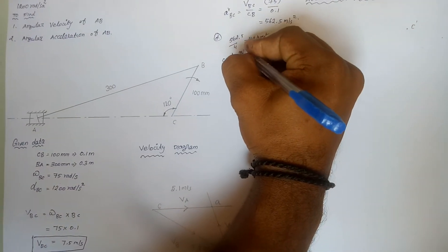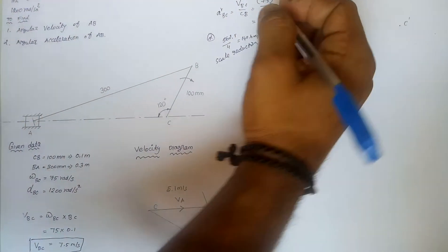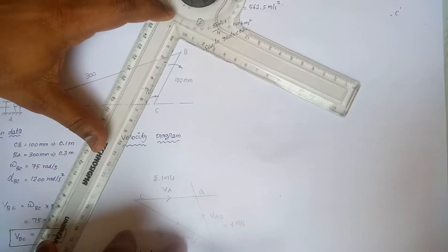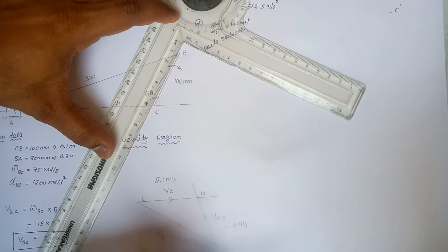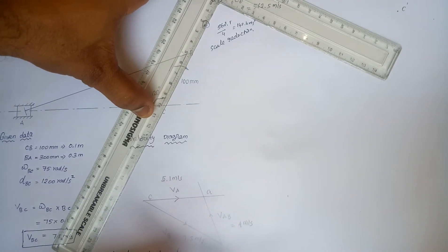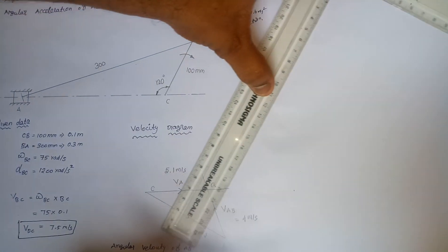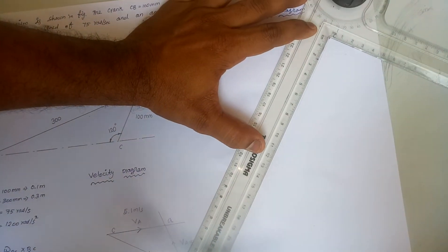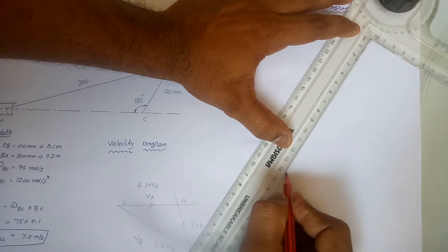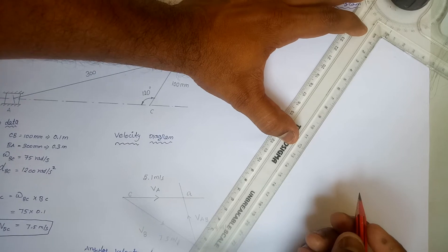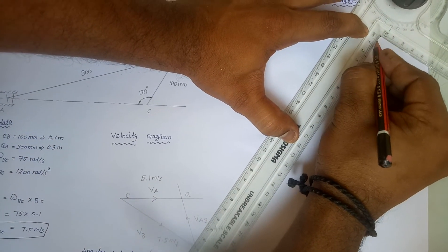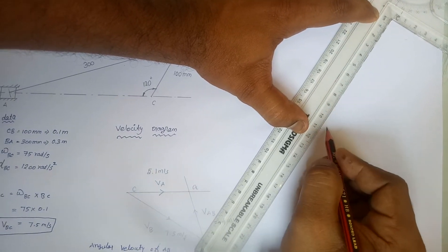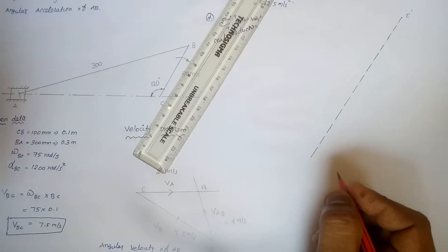The scale reduction is important. First, draw parallel to BC — the scaled value is approximately 140.6. This is a vector line called B prime.